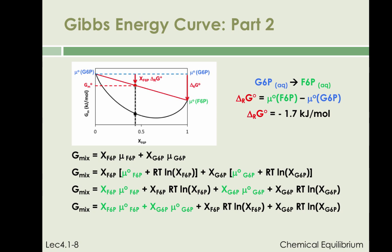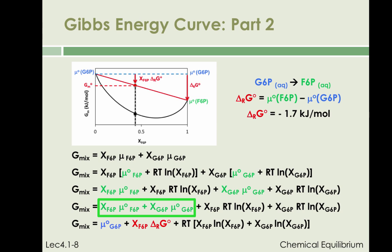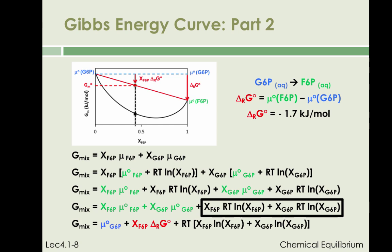Finally, we recognize from the preceding slide that the sum of the first two terms is equal to mu standard G6P plus X_F6P times delta_RG standard. We also recognize that the last two terms correspond to the Gibbs energy change upon mixing to form an ideal solution with mole fractions X_F6P and X_G6P — a result obtained at the end of lecture 4.